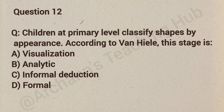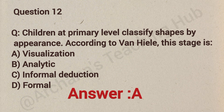Question number 12. Children at primary level classify shapes by appearance. According to Van Hiele stages, this is: Option A - Visualization. Option B - Analysis. Option C - Informal deduction. Option D - Formal. Correct answer is Visualization. Beginners recognize shapes by appearance only.